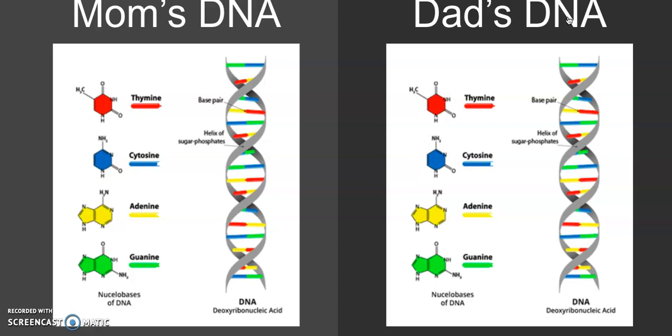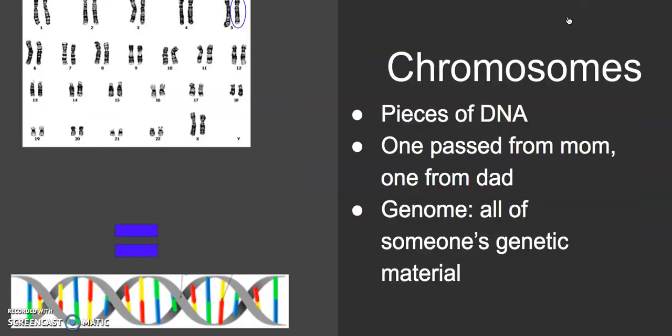Everyone is a combination of two people's DNA — your mother's DNA and your father's DNA. Chromosomes are these pieces of DNA, and you have one passed from mom and one passed from dad.